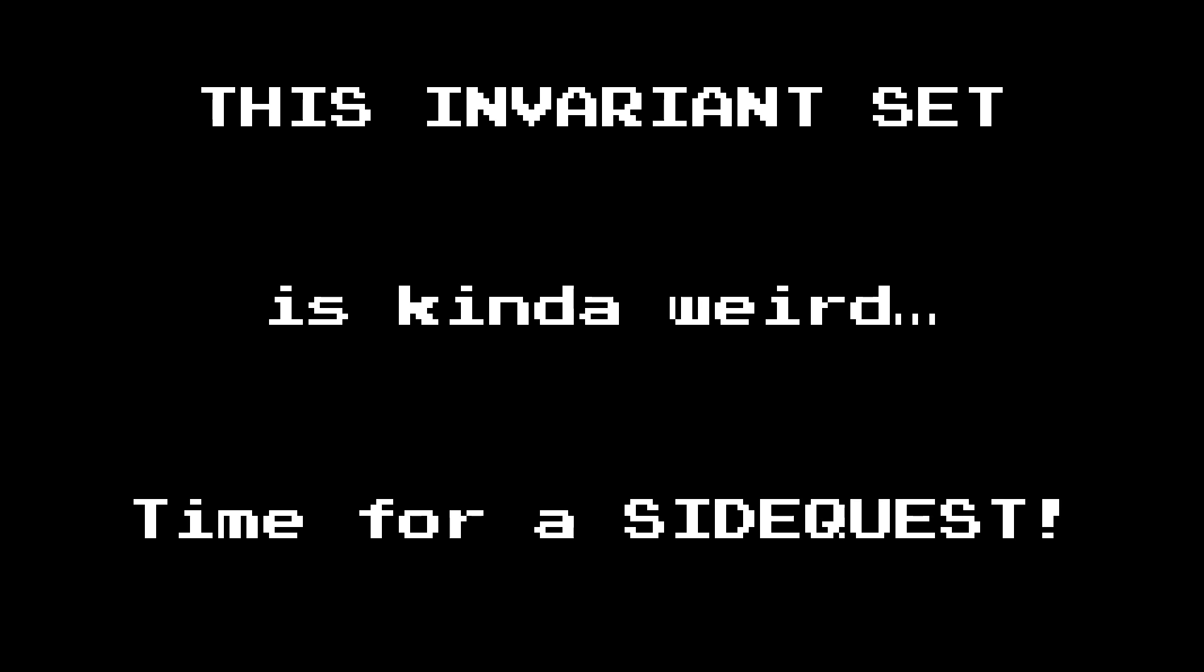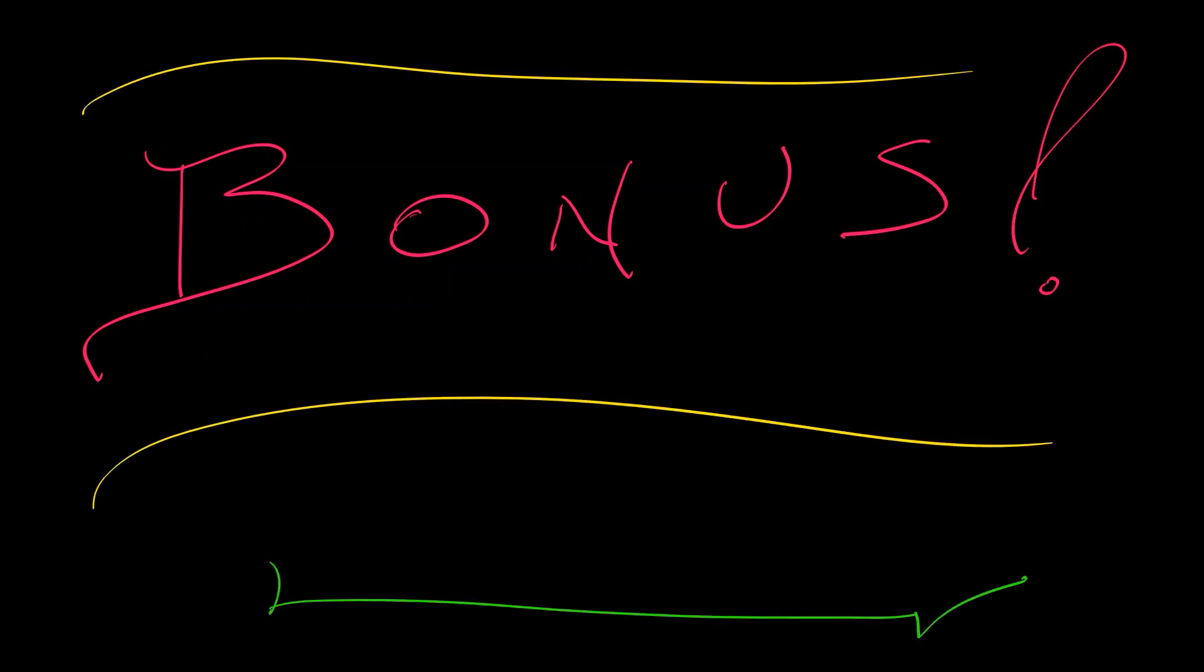The invariant set for the Horseshoe map that we have constructed is a strange kind of set, strange enough to merit a side quest. What follows is bonus material. It is not central to our storyline, but it is a very nice distraction.